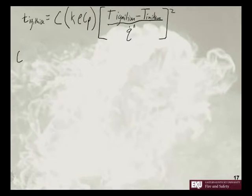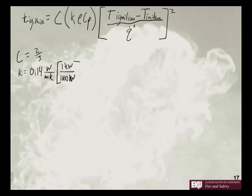So for C, we can say C is equal to two-thirds, assuming some sort of heat loss. K is equal to 0.14 watts per meter Kelvin. Now we said we were going to use these in terms of kilowatts. So this is a thousand watts per one kilowatt. So this is going to be 1.4 times 10 to the negative fourth kilowatts per meter Kelvin.